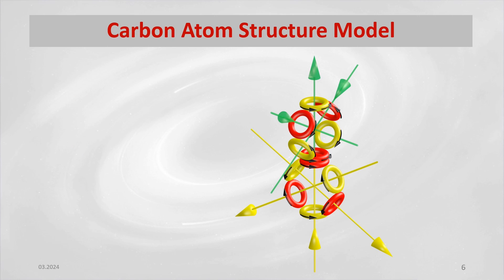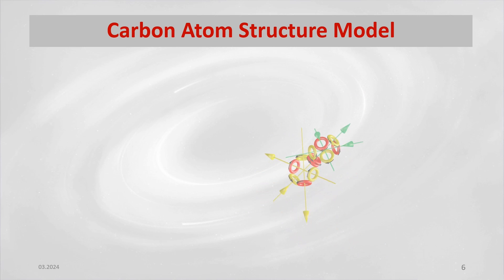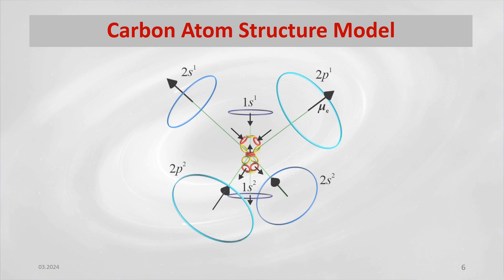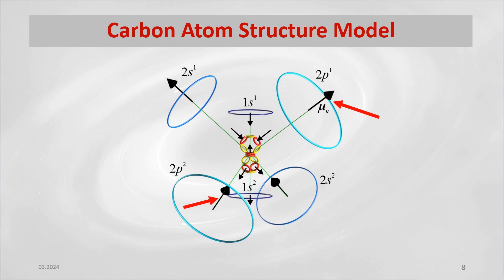This structure of the nucleus globules affects the orientation of the magnetic moments of the electrons, which are bound to the individual protons of the nucleus. Electrons always have an anti-parallel direction of the vectors of their magnetic moments with respect to the magnetic moment vectors of the control protons. Therefore, each of the bonding electrons — both 2p and 2s — with respect to the nucleus of the atom has the opposite direction of the magnetic moment vector.